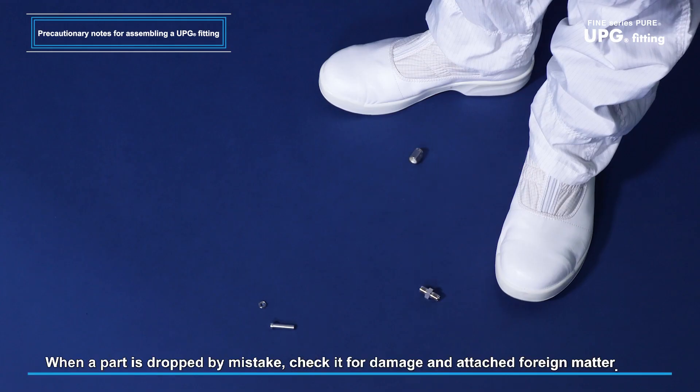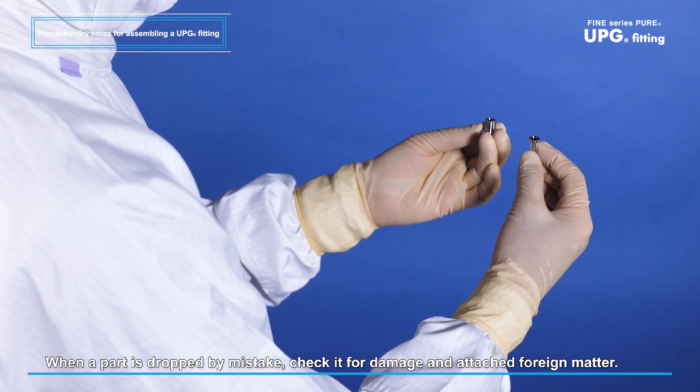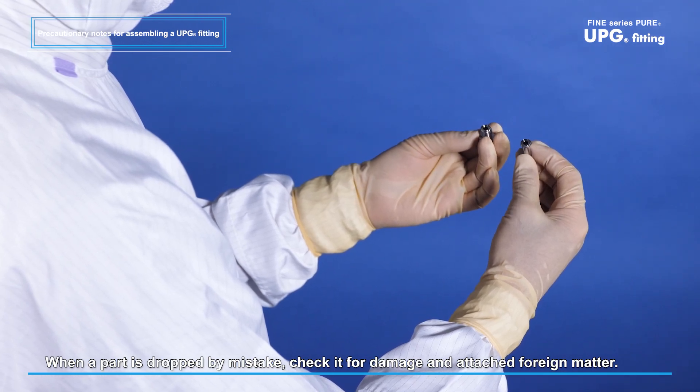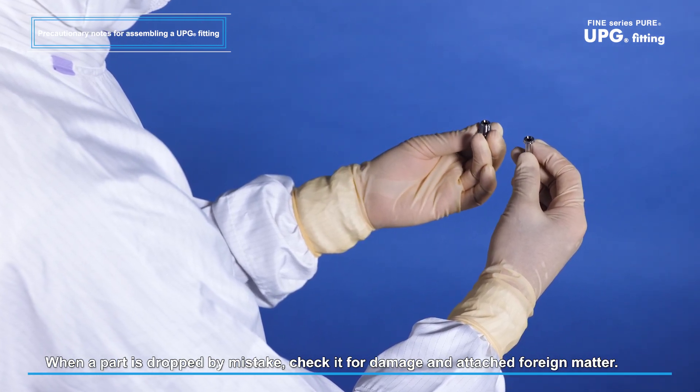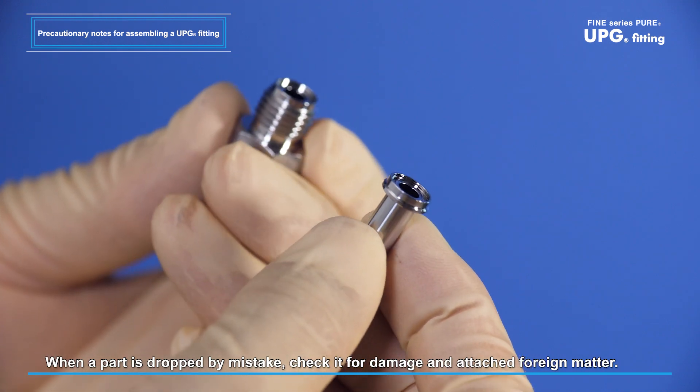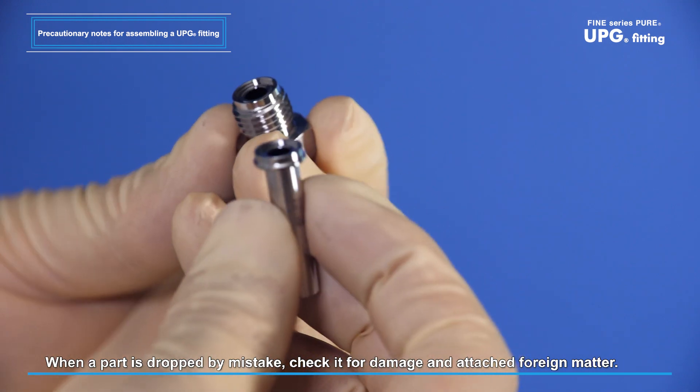When a fitting or a part was dropped by mistake, do not use it as is, but check for damage or attached foreign matter before use. Check particularly the body seal surface, the sleeve tip, and the gasket surface.